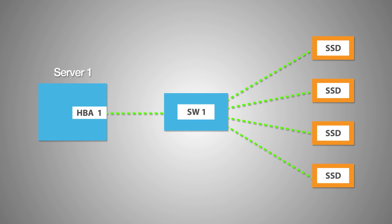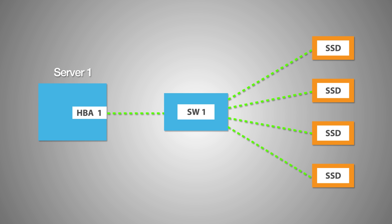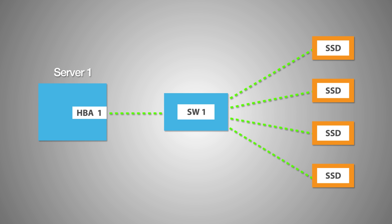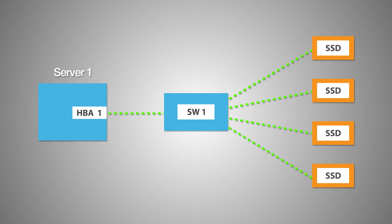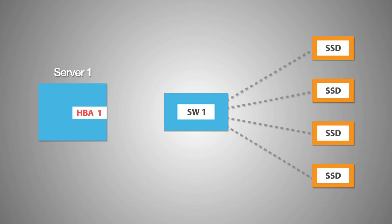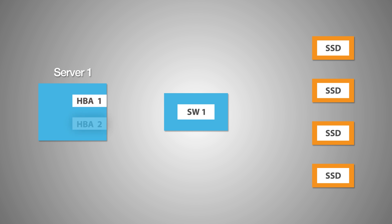There is typically one server controller that utilizes a host bus adapter to connect to the SSDs via PCIe switch. If this connection fails, access to the data will be lost. To support failover in this configuration, an extra HBA can be added to the server.